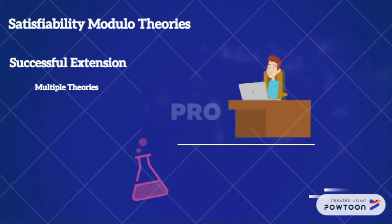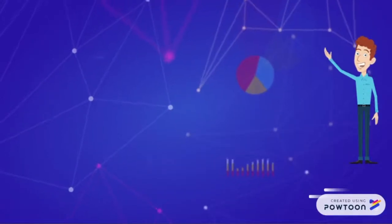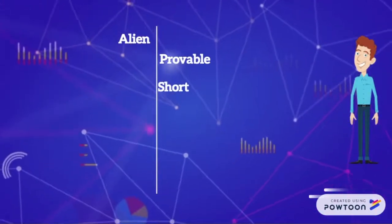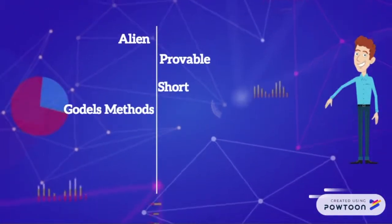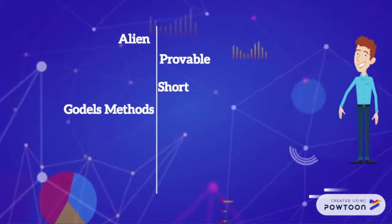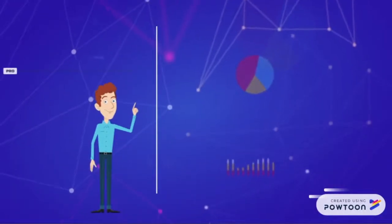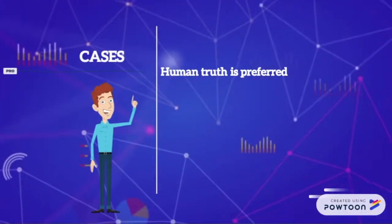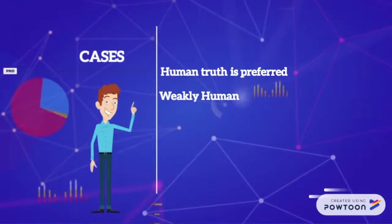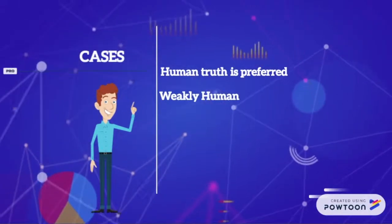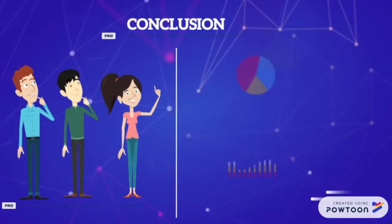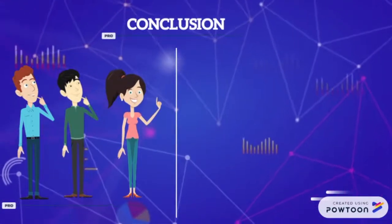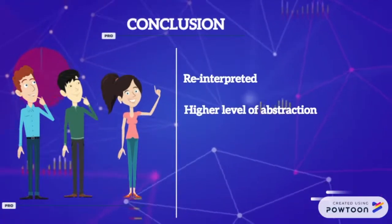Basically, brute force is not concerned with understanding the problem, and hence to understand a problem that has just been solved, human interpretation is required. For example, assume an alien provides a provable but short mathematical statement with a very long proof, which can be constructed using Gödel's method — which basically states that all proofs will require a mathematical and logical number. There are many cases where a paper proof exists and human understanding is preferred. Some proofs are done manually with some computer help, also known as weakly human, and some proofs done manually need to be checked by a theorem prover. It is definitely possible to gain insight using SAT; however, that insight might need to be reinterpreted at a higher level of abstraction.